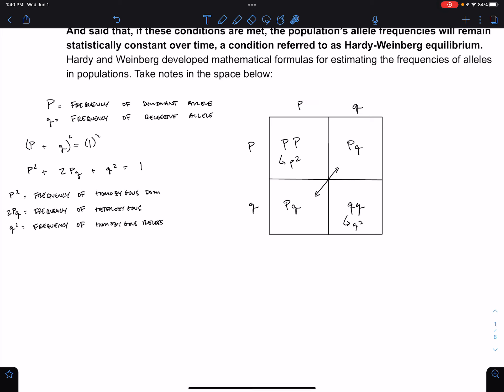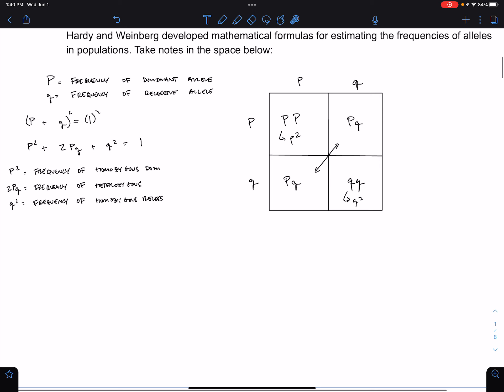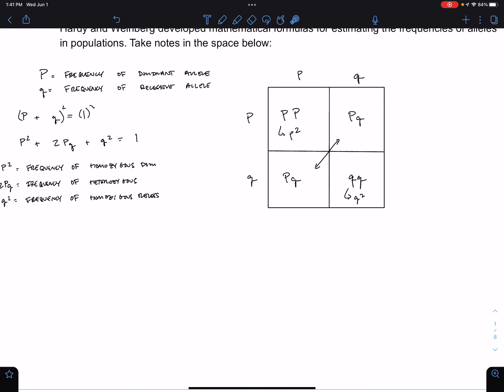You're just as likely to get one allele from your parent as you are to get the other allele that they have from them. There's a 50-50 chance of inheriting any allele from any parent.